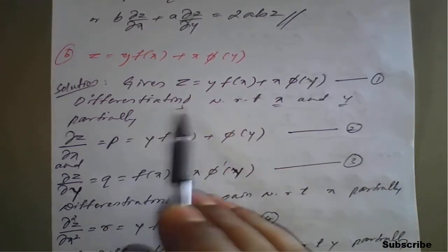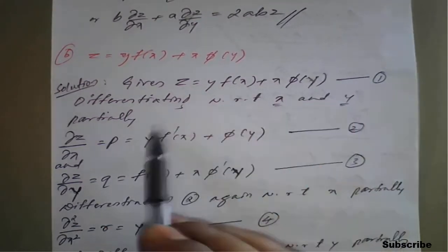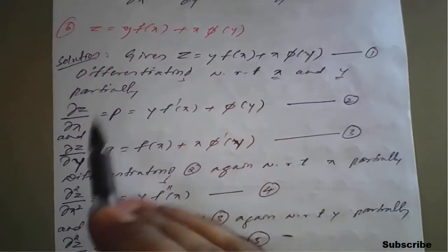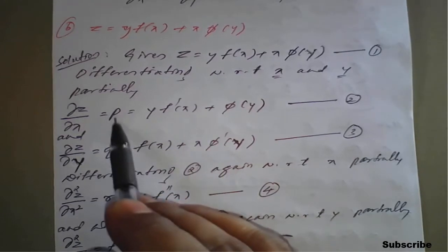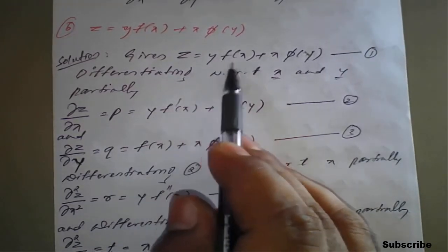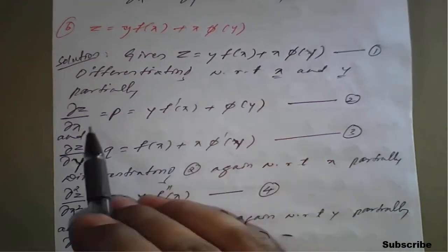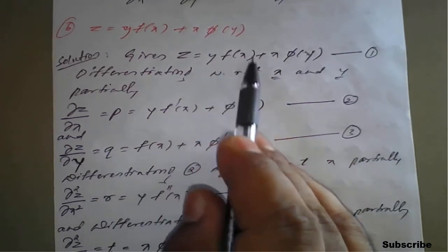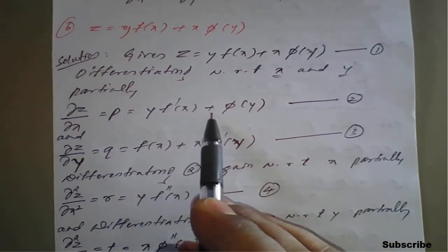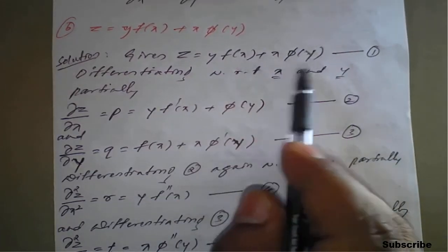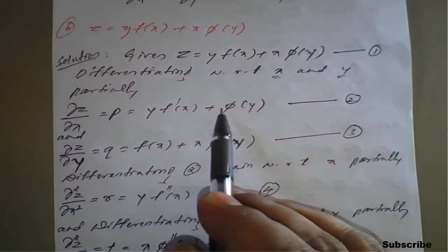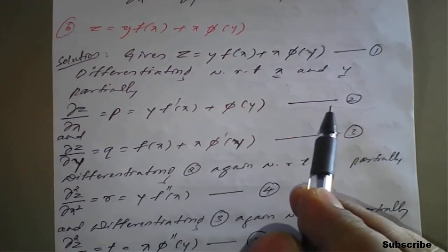The given equation will be differentiated with respect to x partially in the first step. That is, dou z by dou x, which is called p. Keep y as it is because y is a constant with respect to x. So the partial derivative of f of x will be f dash of x, plus phi of x — partial derivative of x with respect to x is 1. This is equation number 2.